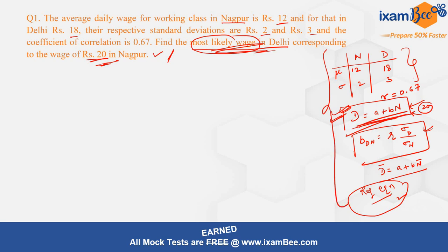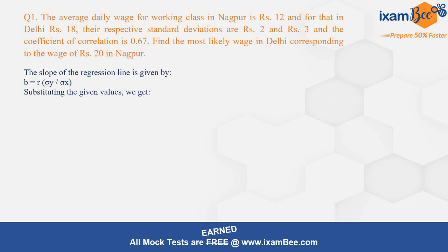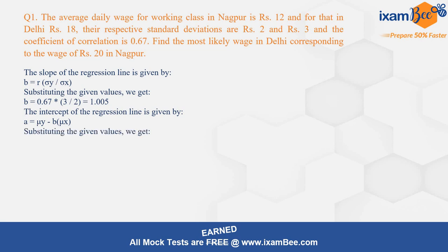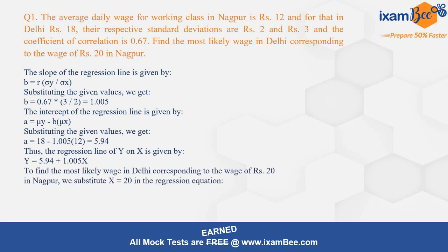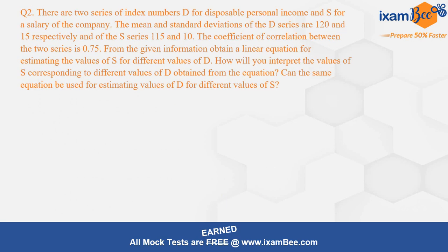Pause the video and read the solution. The slope of the regression line is calculated using that formula, then from the values of the mean and slope you calculate the intercept to get your regression line of D on N. Then plug in the value of 20 to get the most likely wage in Delhi corresponding to the wage of ₹20 in Nagpur.